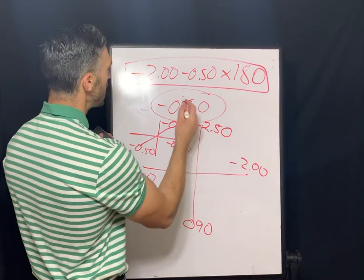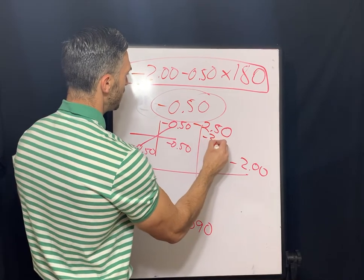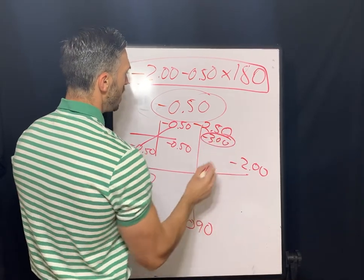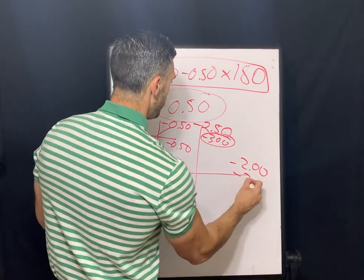So when we add the negative a half over-refraction to this 90 degree, we get negative three. When we add negative a half to this 180 meridian, we get negative 2.50.